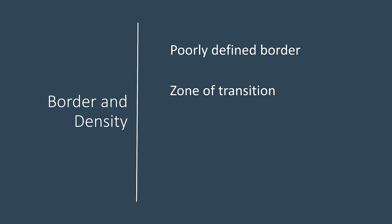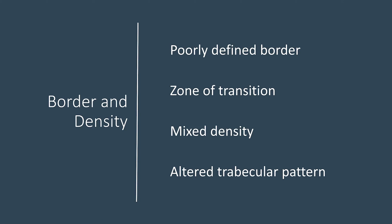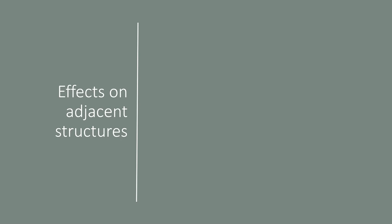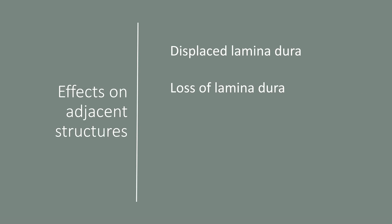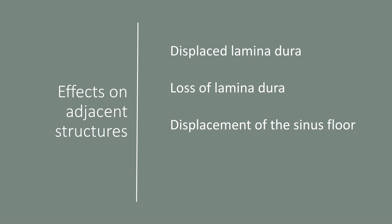There will be a zone of transition slowly fading into normal trabecular pattern. The density is mixed with areas of radiopacity and areas of radiolucency. You will see altered trabecular pattern. The effect on adjacent structures includes displacement of the lamina dura, and in some cases loss of the lamina dura. On the maxillary arch, you may see the sinus floor is displaced. If this lesion is near the inferior alveolar canal, the canal wall could be sclerosed as well.